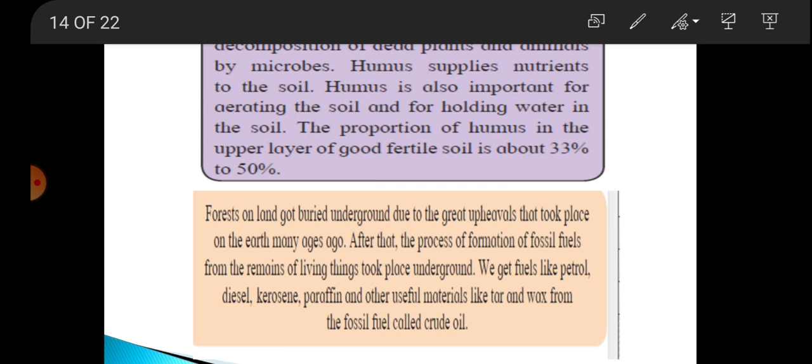It also helps with holding water in the soil. It means soil does not allow the water to wash away; it remains there. The proportion of humus in the upper layer of good fertile soil is about 33% to 50%.